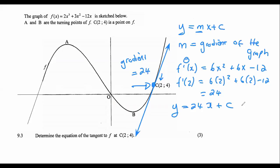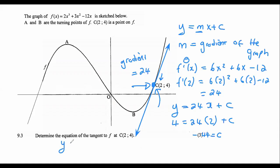To find the c value in y = mx + c, we plug in a point that lies on the tangent — which is point C with coordinates (2, 4). Substituting gives us 4 = 24(2) + c, and solving we get c = −44. So the final equation of the tangent is y = 24x − 44.